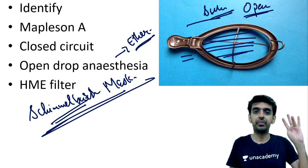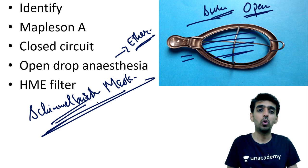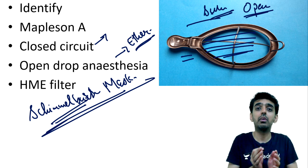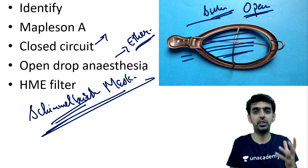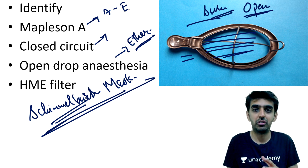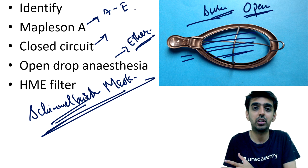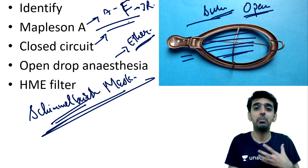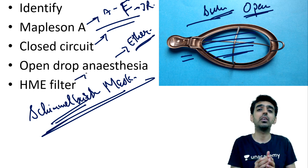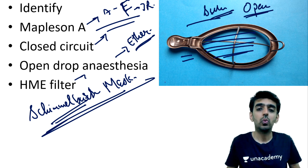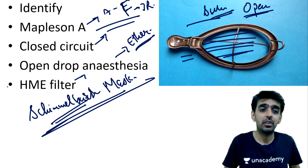Remember, anesthesia circuits are studied under three headings: open, semi-closed, and closed circuits. Closed circuits always have unidirectional flow, two limbs, and a carbon dioxide absorber. The Mapleson system of circuits ranges from Mapleson A to Mapleson F — including the Ayre's T-piece and its Jackson-Rees modification. The HME filter is a different entity altogether used to filter air in the circuit. The correct answer here is the Schimmelbusch mask — open drop anesthesia technique.